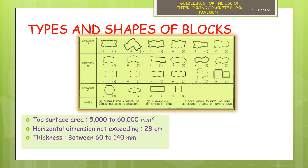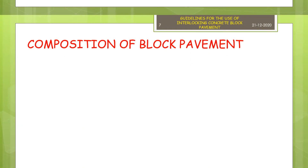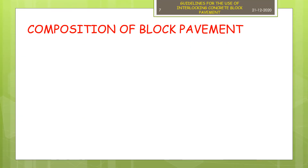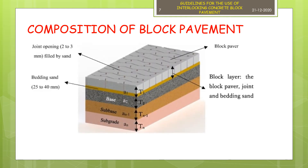The overall dimensions of blocks used in different parts of the world are as follows. Except for the top bearing part of the pavement, the base and subbase layers are similar to the conventional flexible or rigid pavement. In general, block pavement is comprised of four layers which are: subgrade, base and subbase, sand bedding, and the surface course i.e. blocks.